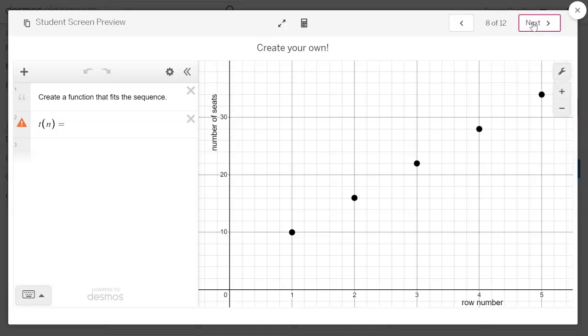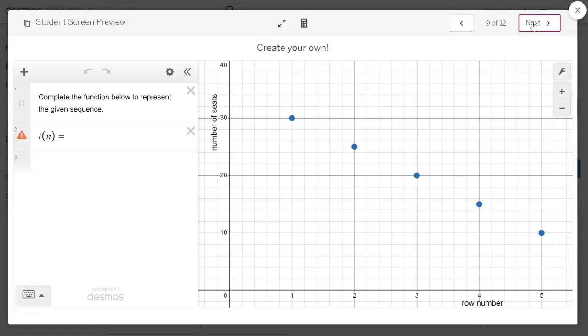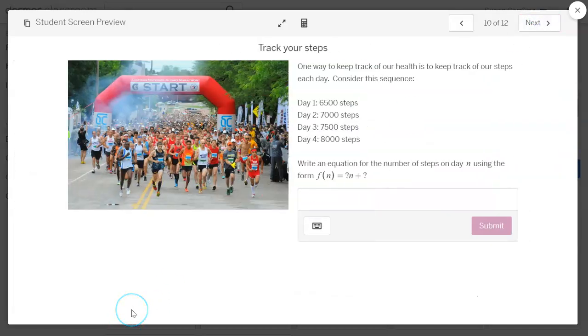Again, you may want to mention for a sequence, we don't technically connect the dots, but we're doing it here just to come up with an equation. And here's another one, but with a decreasing, with a negative slope. Here's a context. This time I'm telling them use slope intercept form. Change the variable instead of F of X. We're using F of N.